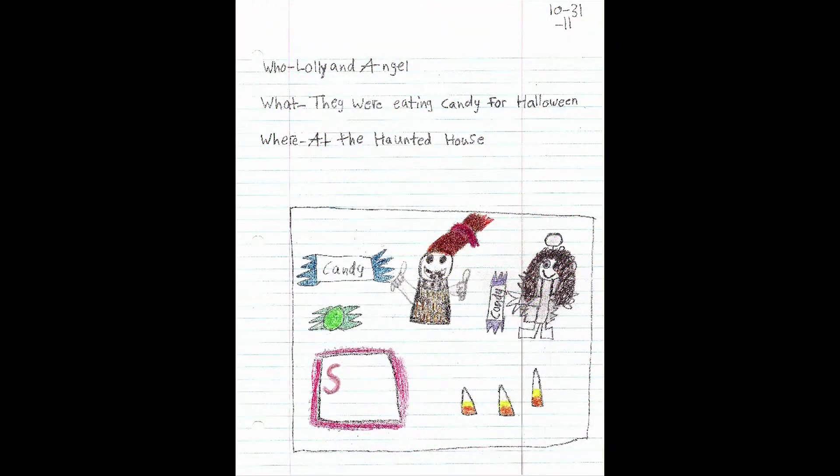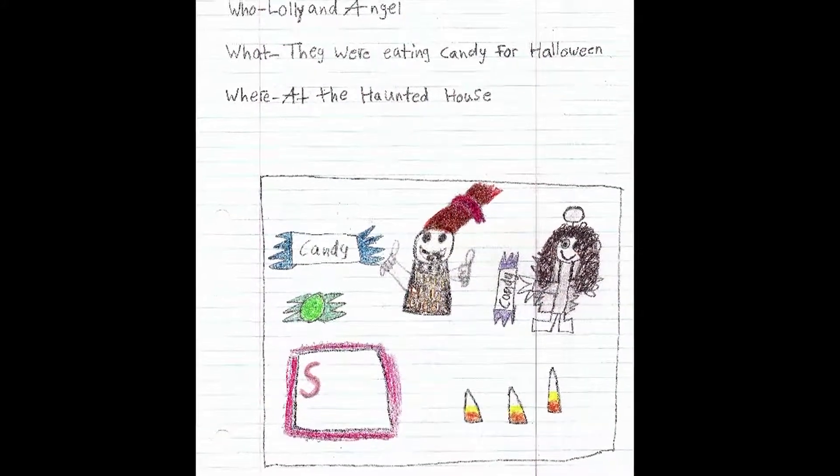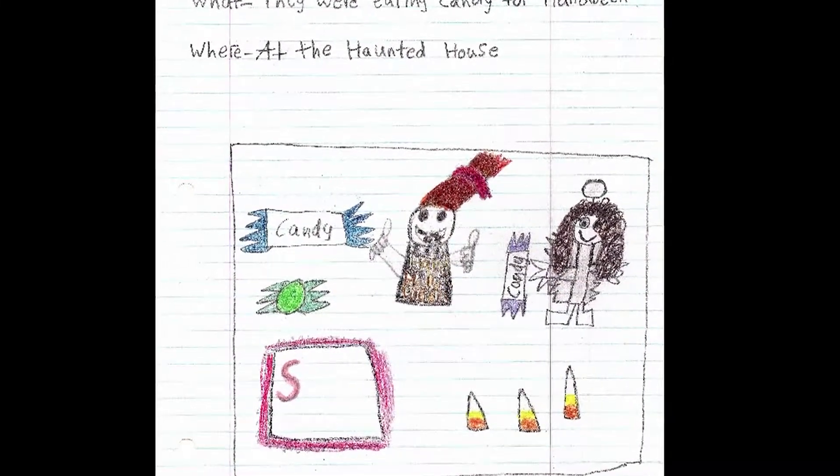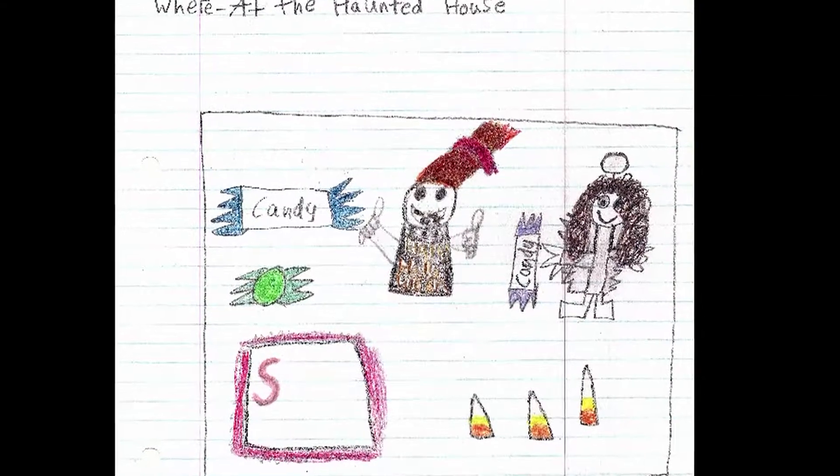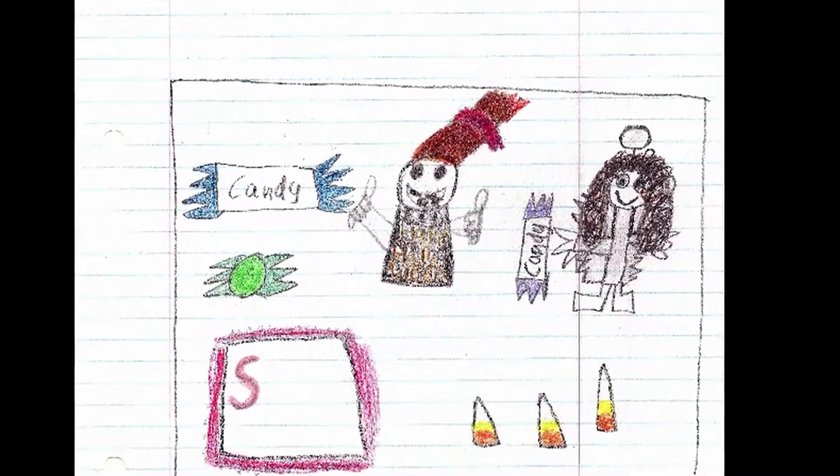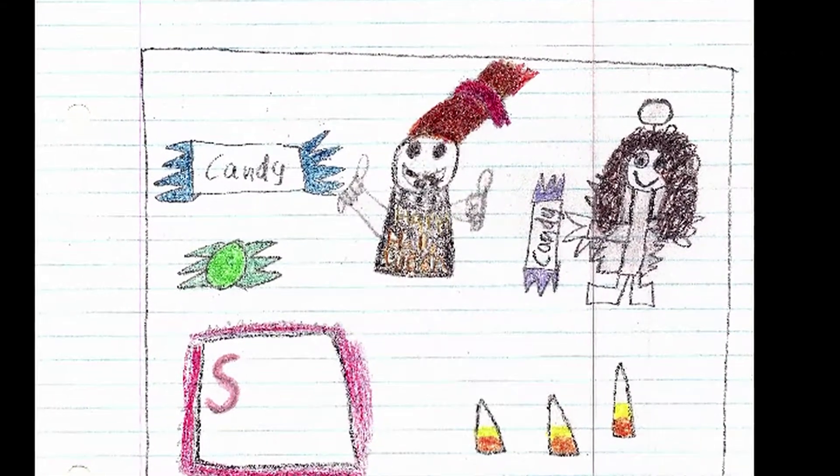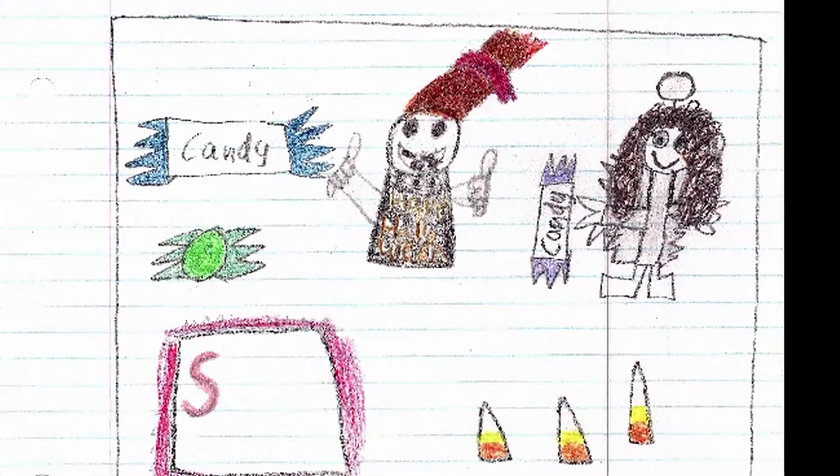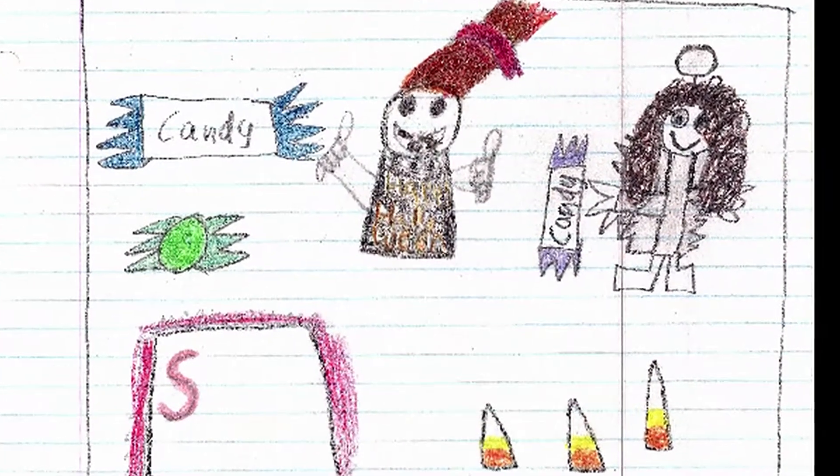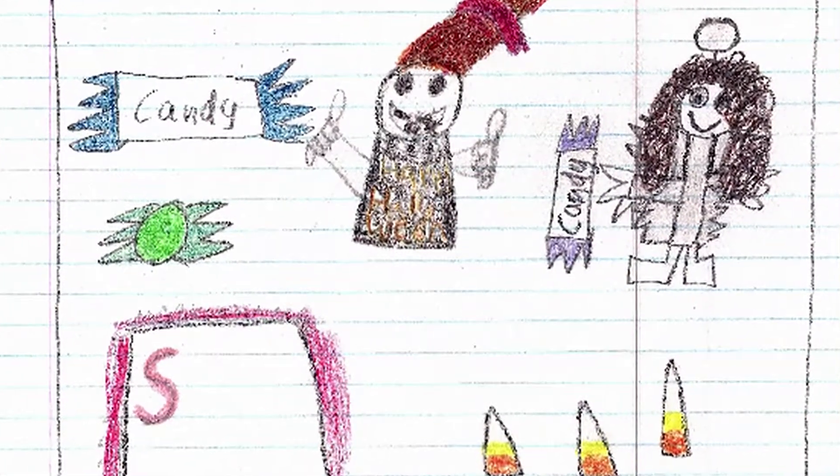I like this one. I love this. That's a good picture of me. Okay, who was in the box? Lolly and Angel. And they were eating candy for Halloween at the haunted house. The who, what, where? I liked it. And such a great picture. And there's candy corn.